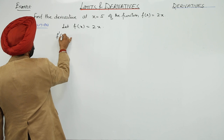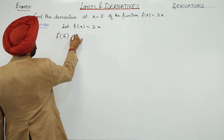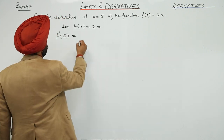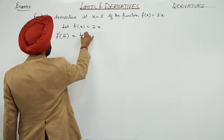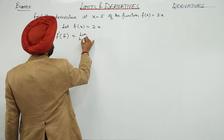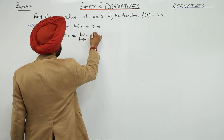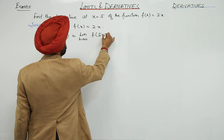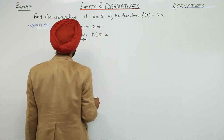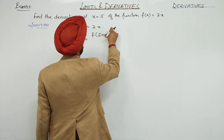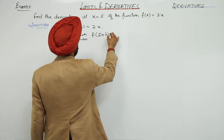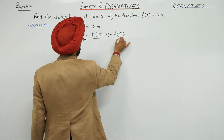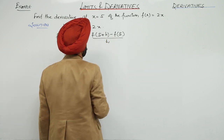f derivative we are finding for 5. f'(5), first according to the definition, we will be having limit h approaches to 0 of f(5 plus h) minus f(5) upon h.